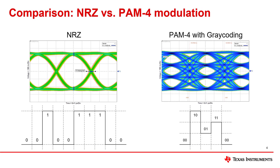Gray coding helps to minimize bit errors by ensuring only one bit value changes with each defined voltage level. PAM4 with gray coding maps the following binary values to each voltage level from lowest to highest: 00, 01, 11, and 10. Therefore, if a PAM4 receiver misses the intended voltage level of a symbol, only one of the two bits will be in error.